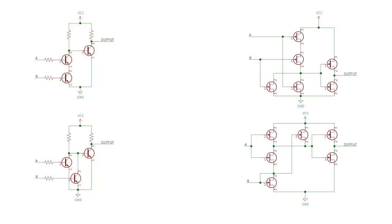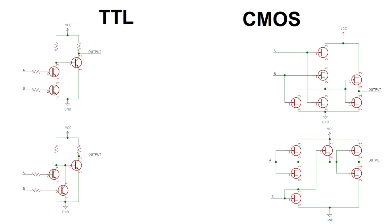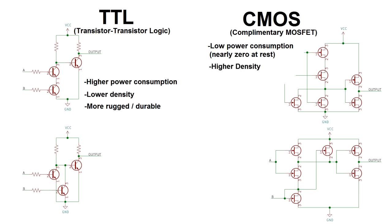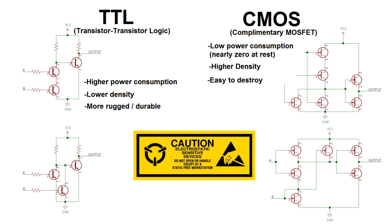There are two main types of transistor logic used in computing: TTL and CMOS. TTL stands for Transistor-Transistor Logic and uses Bipolar Junction Transistors to build logic gates. CMOS stands for Complementary MOSFET, which uses a P and N channel MOSFET. TTL uses more power and can't fit as many transistors in a given space, but it's a lot more durable. CMOS uses dramatically less power and MOSFETs can be built much smaller, but it's very easy to damage or destroy them, which is why you always have to observe electrostatic discharge precautions when handling anything with CMOS chips.